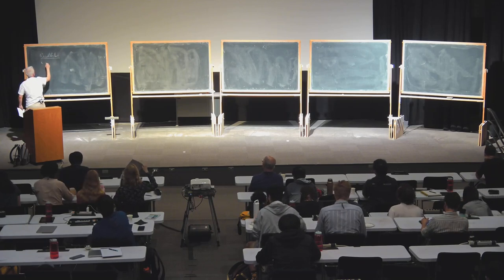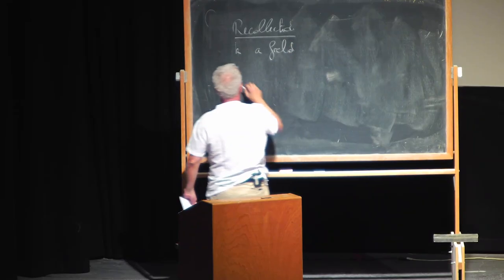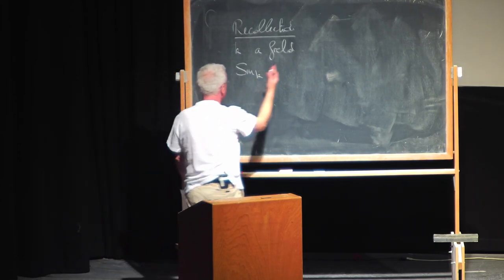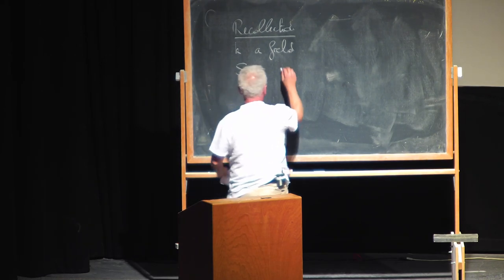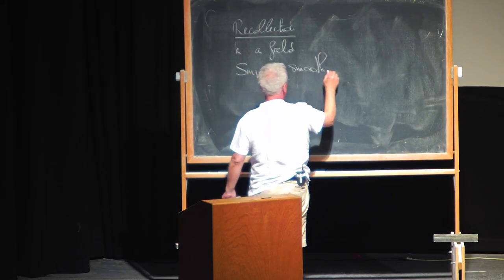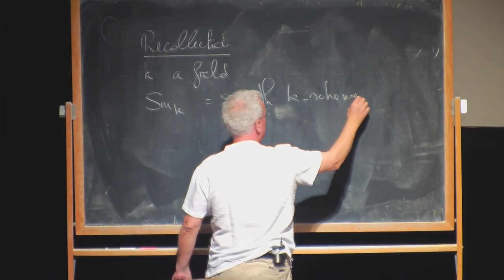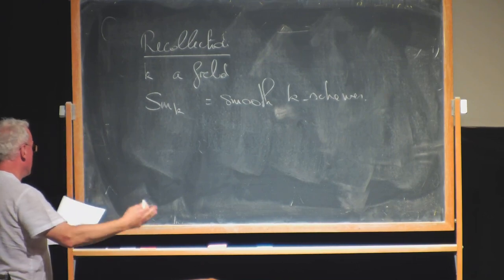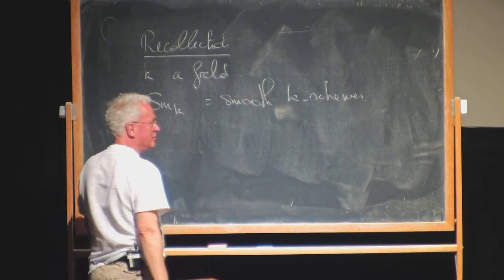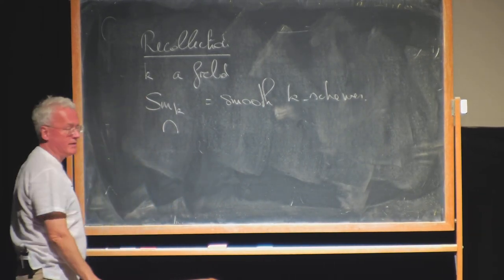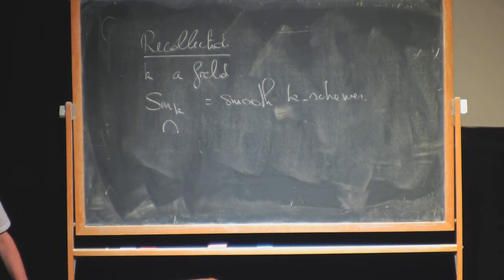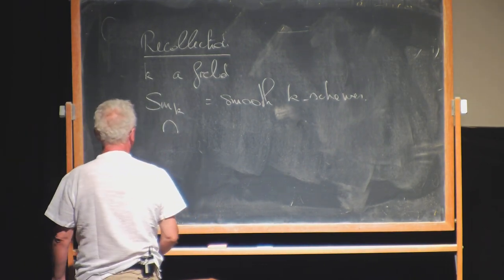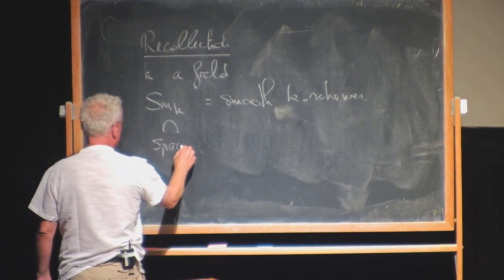We fix a field k and denote by Smooth/k the category of finite type smooth schemes over k. What you have seen several times at this summer school is that there are several approaches which lead to the same homotopy category, but the idea is to embed that category into a bigger category which everyone calls 'spaces' or 'motivic spaces' over k.